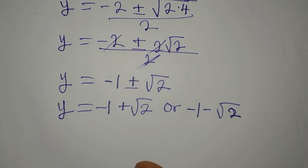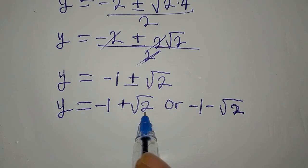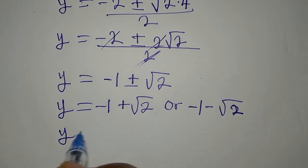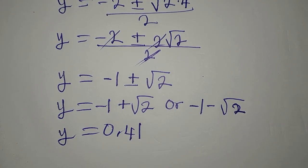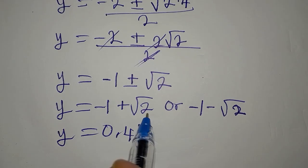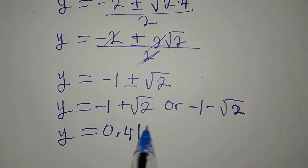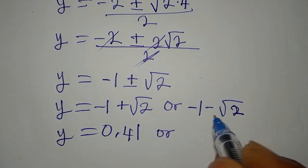Minus 1 plus root 2 is going to give us 0.41, so y is 0.41. This is because square root of 2 is approximately 1.414 and so on.